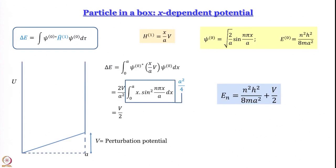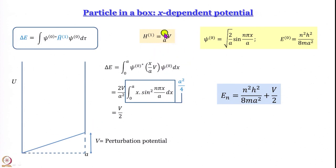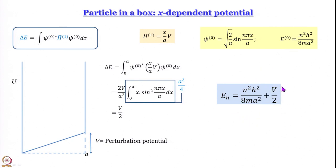With this background, we already discussed the particle in a box with a slanting bottom: when x = 0 the potential energy is 0, and when x = a the potential energy is V. This perturbation potential is a straight line, simply becoming x·V/a. Putting this into the expression for δE using the wave functions of the unperturbed system, we got δE = V/2. So the energy of the nth state is the unperturbed energy plus V/2 — all energy levels are just offset upward by V/2.